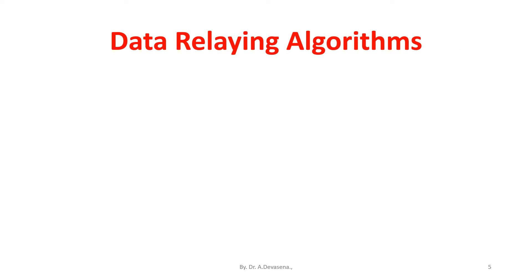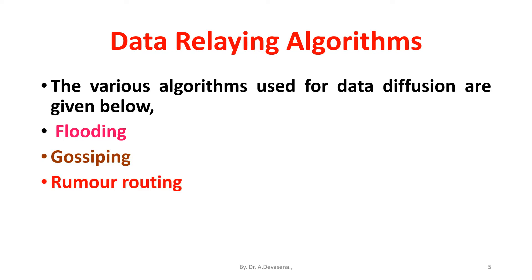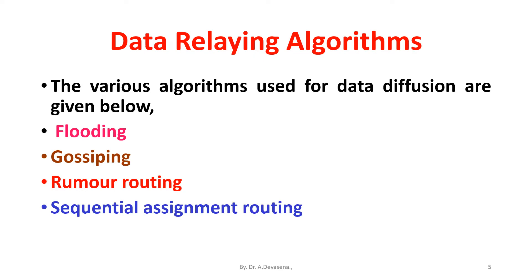Let us start discussing data relaying algorithms. The various algorithms used for data diffusion are: first, flooding; second, gossiping; third, rumor routing; fourth, sequential assignment routing; and fifth, directed diffusion. Let us see these algorithms one by one.